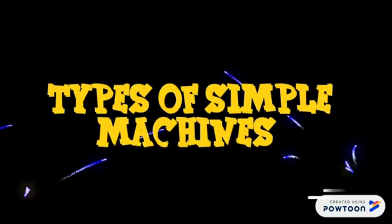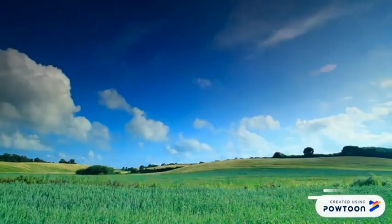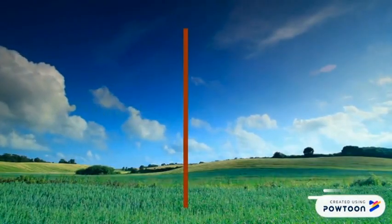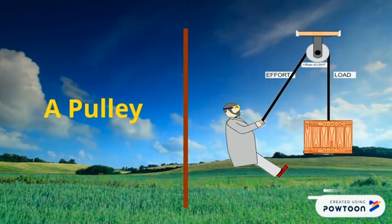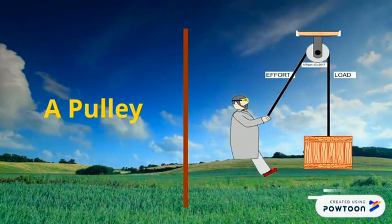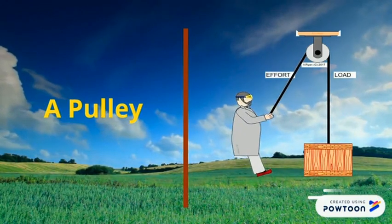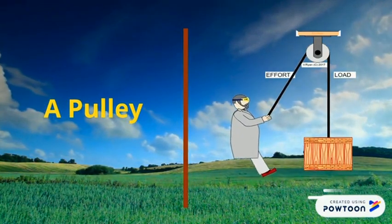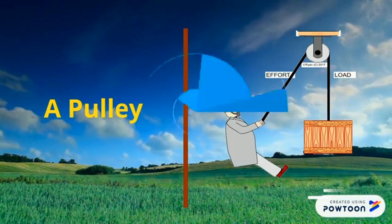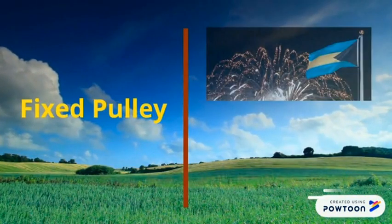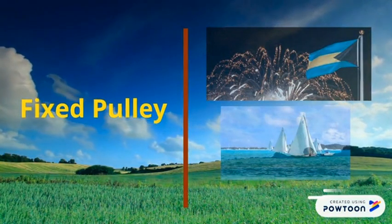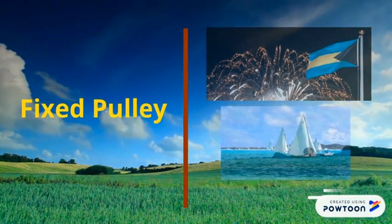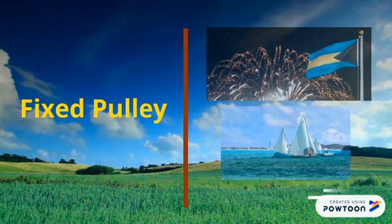Here are the different types of simple machines. A pulley — as you can see in the picture, when you pull down on one rope end, the wheel turns and the other rope end moves up. A fixed pulley is used to raise and lower something lightweight, such as a flag or a small sail.